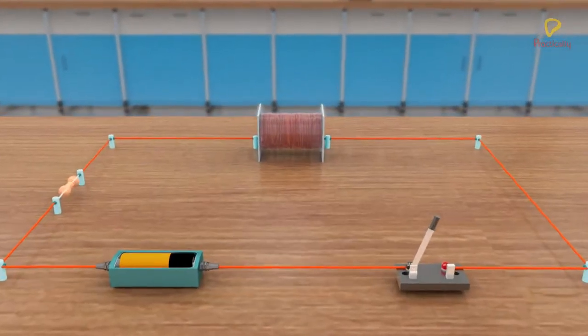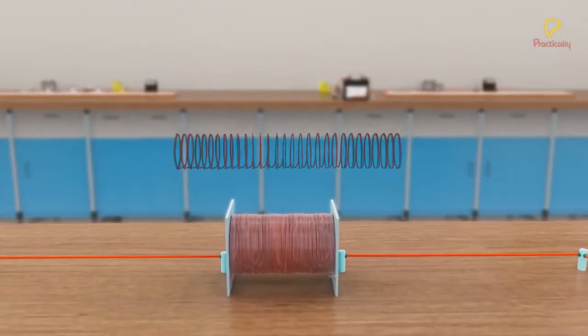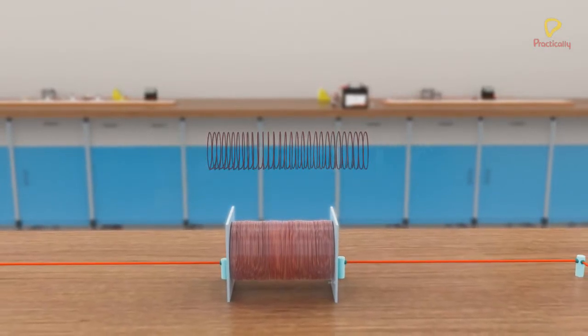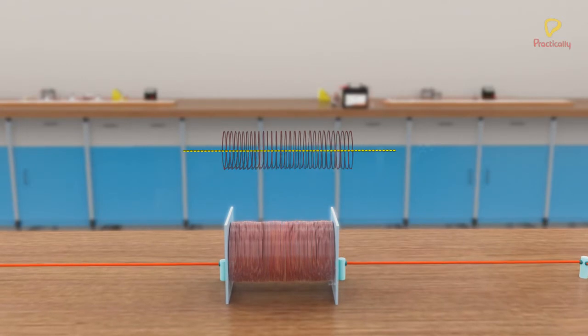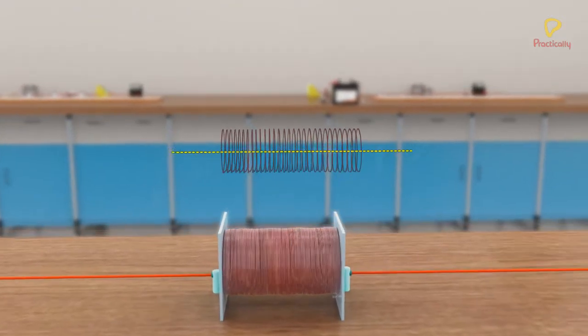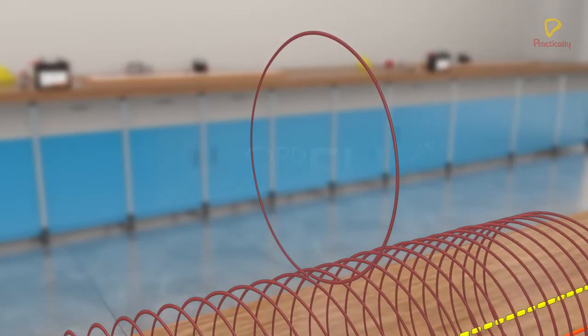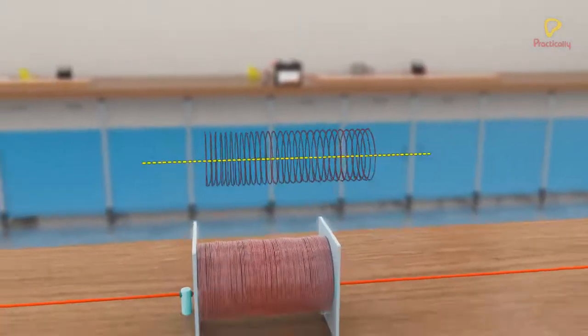A solenoid is a tightly wound helical conducting coil whose diameter is very small compared to its length. The winding of each turn is sufficiently taut for it to be approximated to a circular wire loop, lying in the plane perpendicular to the axis of the solenoid.